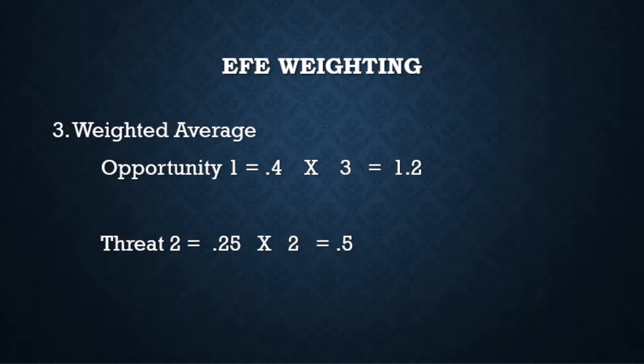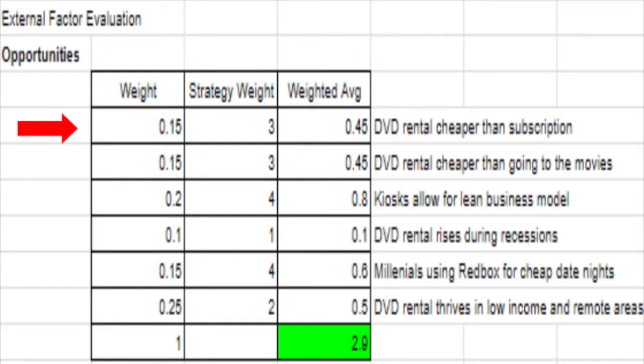After the Strategy Weight has been completed, the final piece of the EFE is to calculate the final portion, which is to multiply the first weight by the second weight to get the final weighted value. Once this number is calculated, larger numbers become the most important and smaller numbers just the opposite. In summation, this helps determine what is important in the external environment and what is not, allowing the firm to find a good focus point.